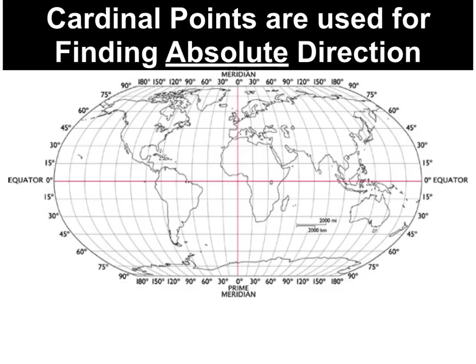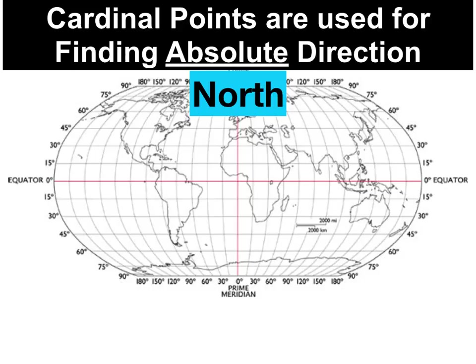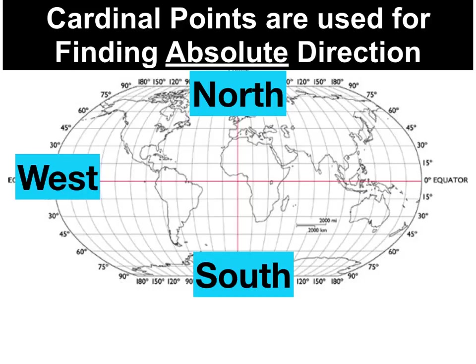Cardinal points are used for finding absolute direction. There are four cardinal points: north, south, west, and east, and they're used for finding absolute direction on a map.